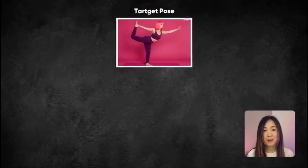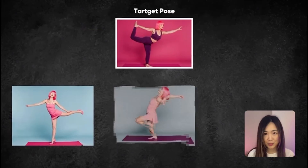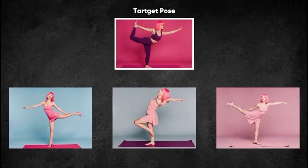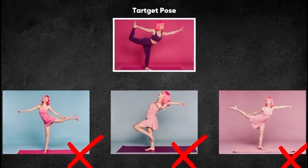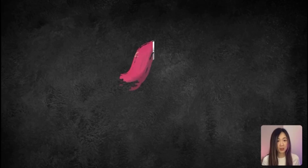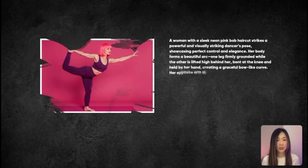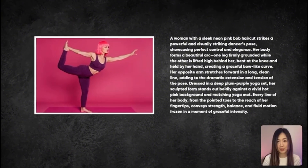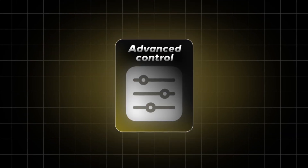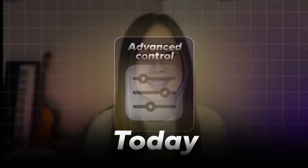Ever generated an AI character that was almost perfect, but the pose was wrong or the camera angle just didn't tell the story in your head? Sometimes the exact pose or composition you need is just too specific to describe in words. And that's why we need advanced control.